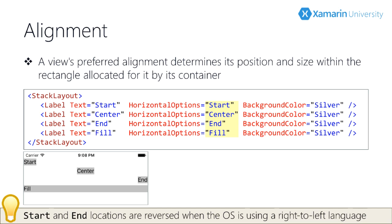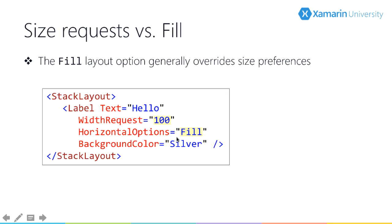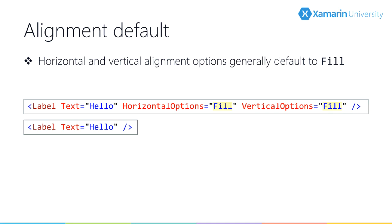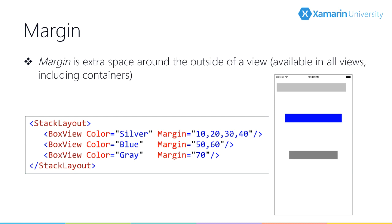Note that these are called start and end, not left and right — their location would be reversed in a right-to-left language. Fill controls and impacts the size of a view. If you have both a width request and horizontal options set to fill, fill wins — fill takes precedence over width request. Similarly, vertical options of fill takes precedence over height request. The reason that's important is because fill is the default, so both labels here are equivalent when you don't specify anything.